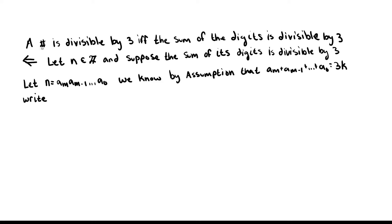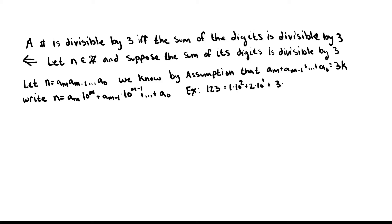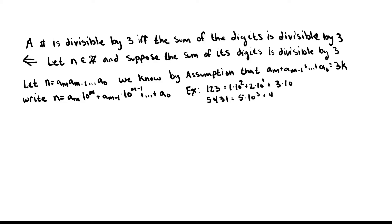What we're going to do is write n as a_m × 10^m + a_{m-1} × 10^{m-1} + ... + a_0 × 10^0. For example, 123 is 1 × 10² + 2 × 10 + 3 × 10^0. And 5,431 is 5 × 10³ + 4 × 10² + 3 × 10 + 1 × 10^0.